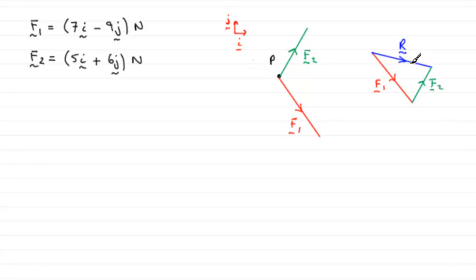And to get R, what we could do is just simply add F1 and F2 together. So I'm going to start by saying that R equals F1 plus the force F2. And if we add those two together, we've got 12i, and minus 9j plus 6j gives us minus 3j.